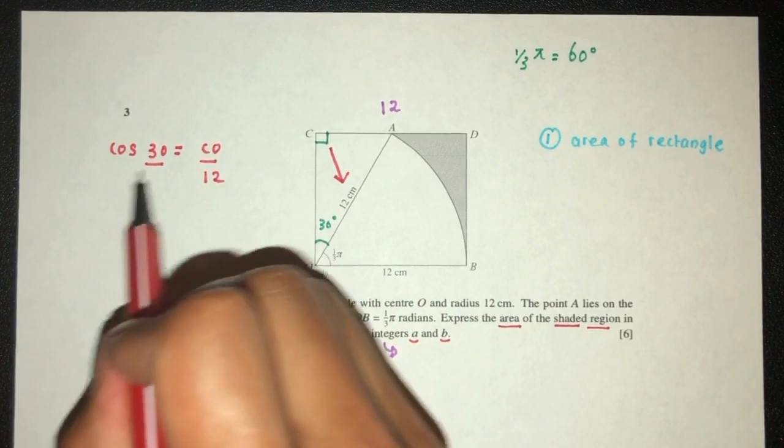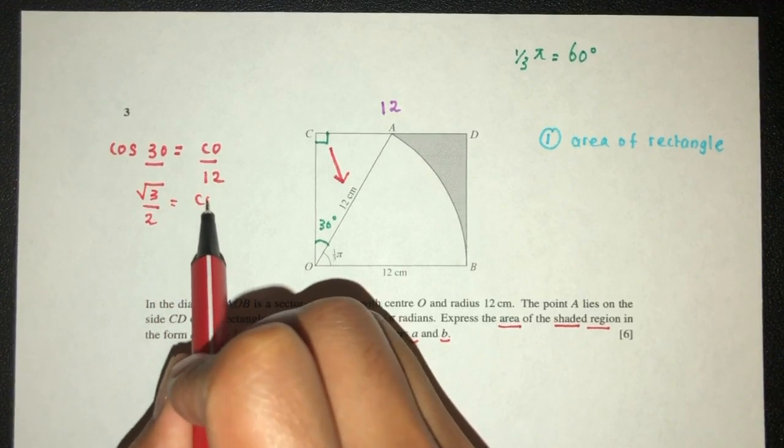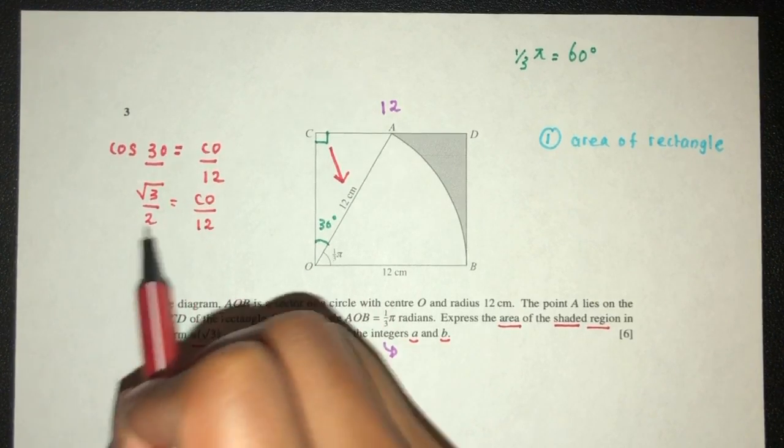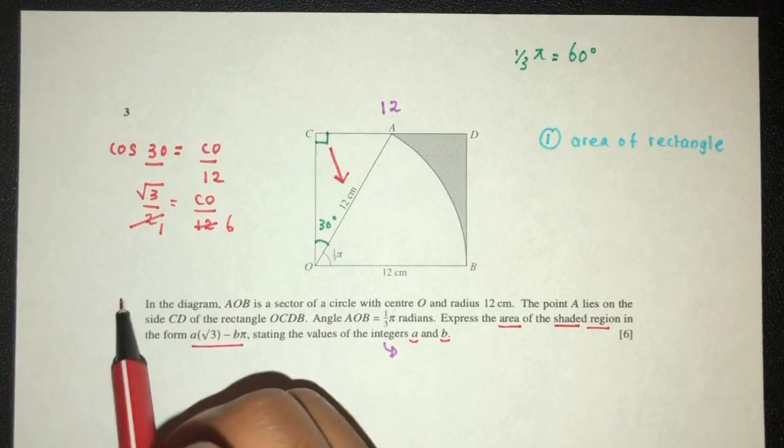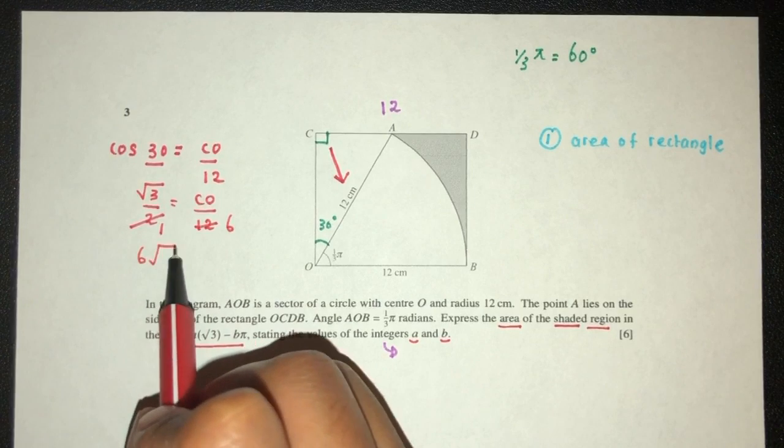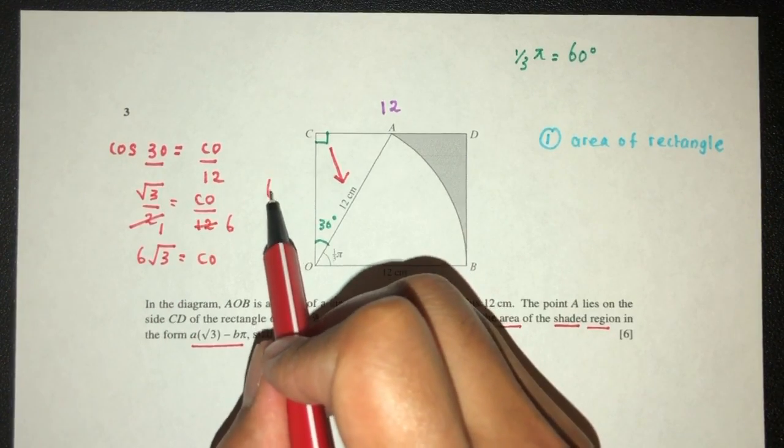So this will be what? This is the exact value of root 3 over 2 have to be CO over 12. We can divide by 2. 1, that should be 6. Then cross-multiply should be 6 root 3 will be CO. So this length here will be 6 root 3.